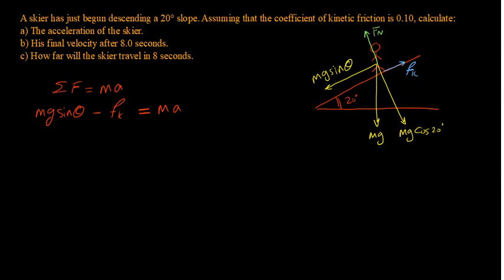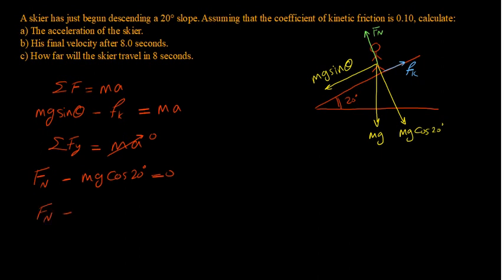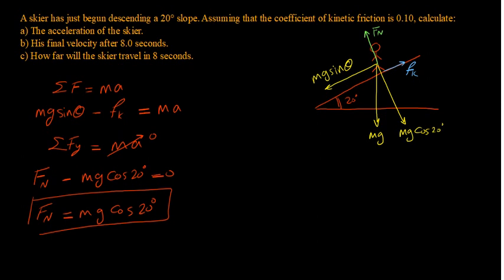We don't have the mass, but it may not be necessary. We have theta, we have gravitational acceleration, and we need the acceleration. The missing piece is the friction force, which we can find using the y-axis. On the y-axis, acceleration equals zero because there is no motion perpendicular to the surface. So the normal force minus the perpendicular component of the weight equals zero, giving us: normal force equals mg cosine 20 degrees.